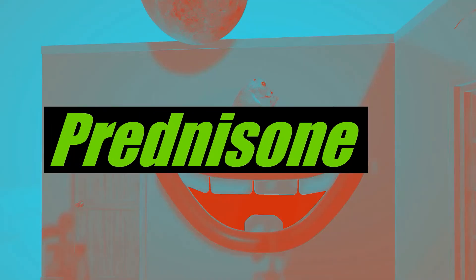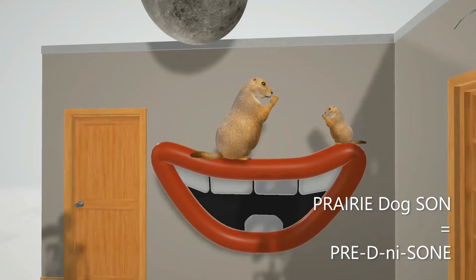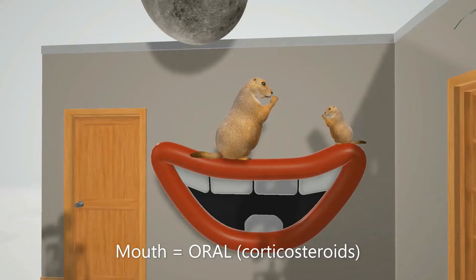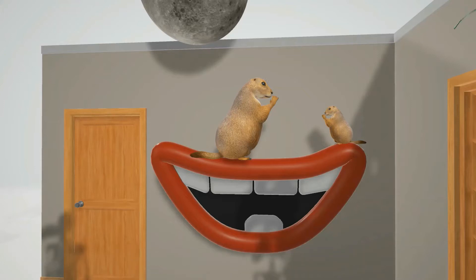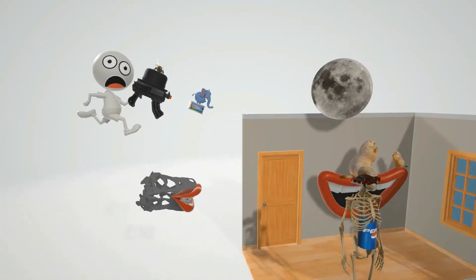In this scene we're going to talk about prednisone and other oral corticosteroids. We have the prairie dog — the father with his son — prairie dog with son for prednisone. This mouth over here reminds us that we're talking about the oral corticosteroids as opposed to the inhaled ones. The oral corticosteroids have lots more systemic adverse effects associated with them.